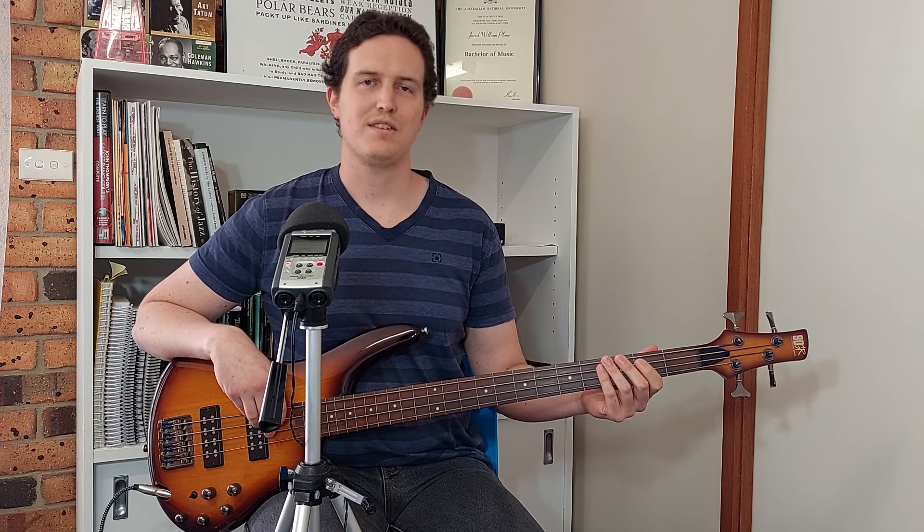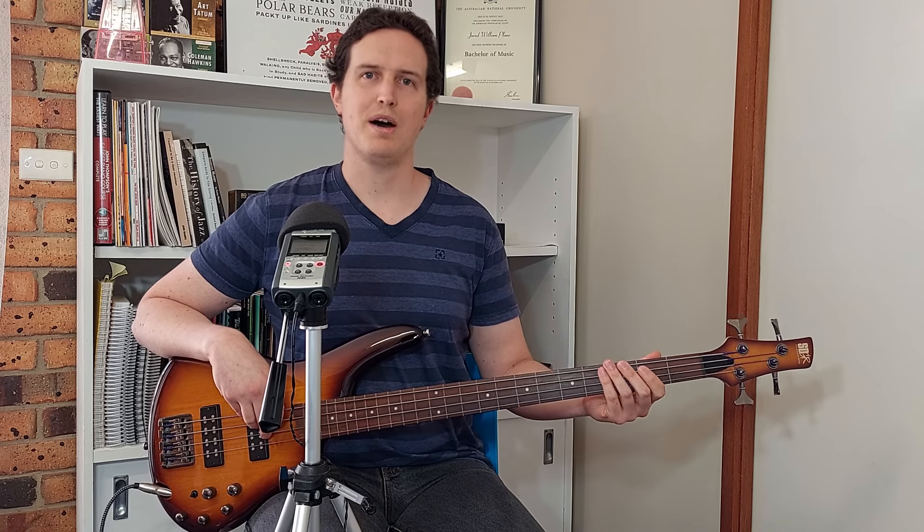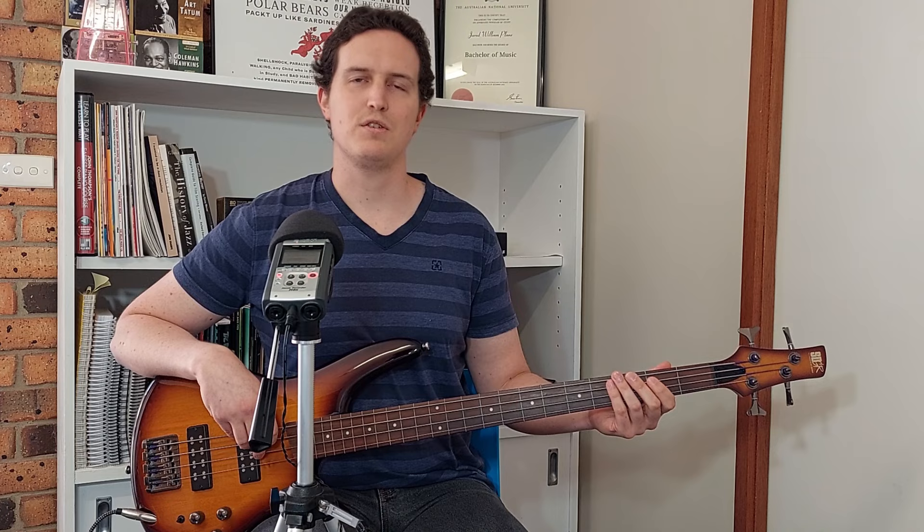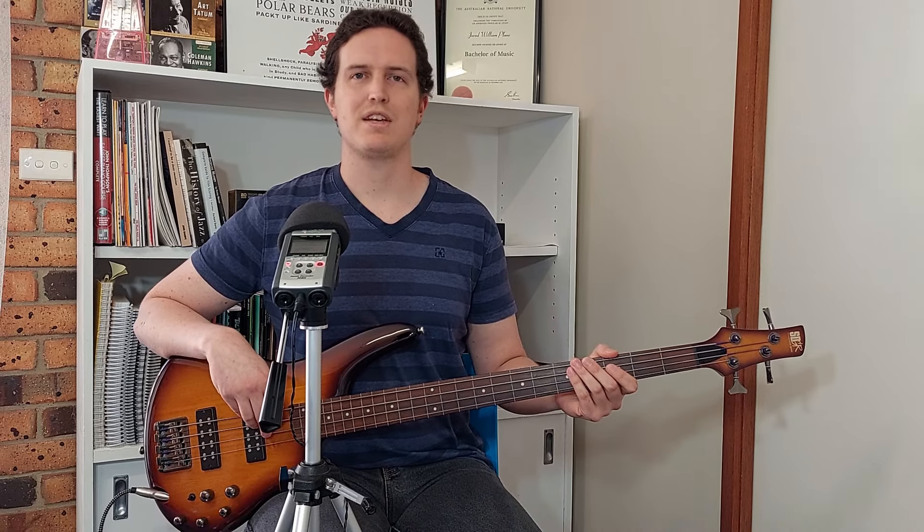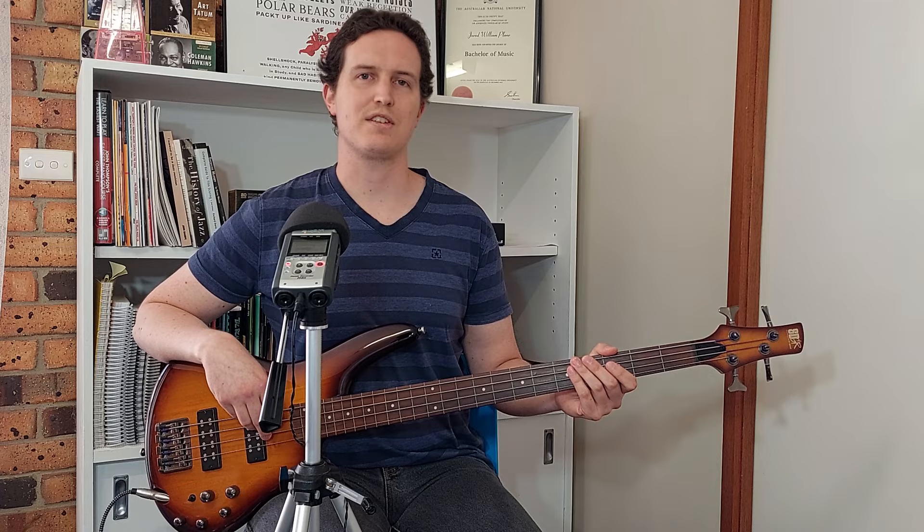Our beginner's walking bassline for this lesson is Afternoon in Paris by John Lewis. This bassline was composed with the complete beginner walking bassist in mind. This tune is great for practicing your 2-5-1 walking basslines in different keys. In the B section, we're coming back to our old friend, the walk-up. Alright, that's enough of me talking. This is what the bassline sounds like.